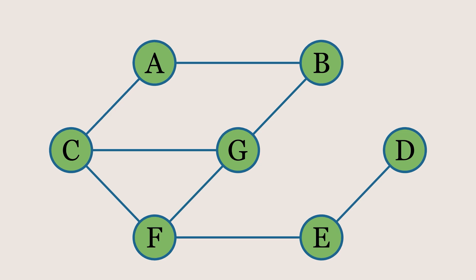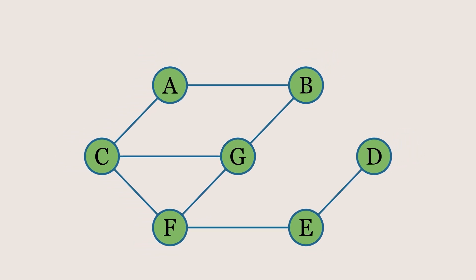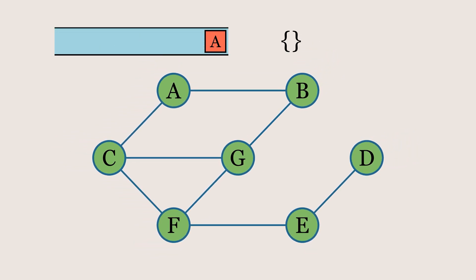Now, let's see how the algorithm works in this example. First, we initialize a queue with the starting node, in our case node A, as the initial value. We also create an empty set to keep track of the nodes we visited.